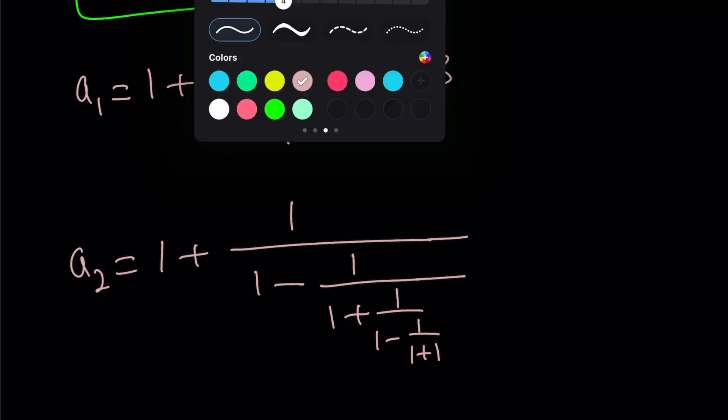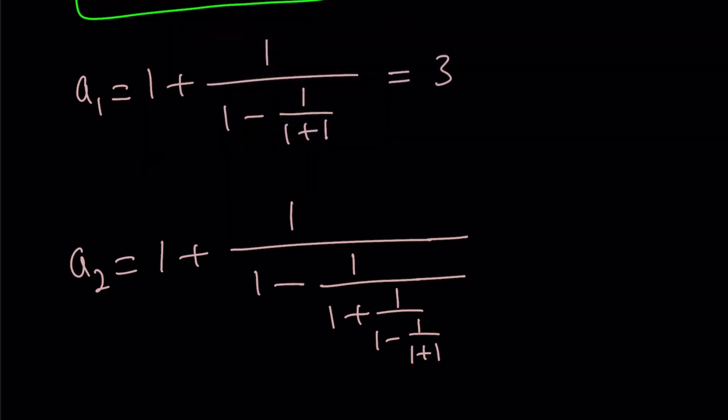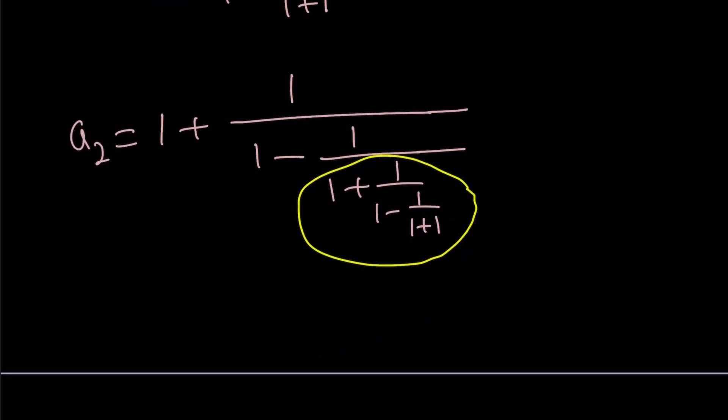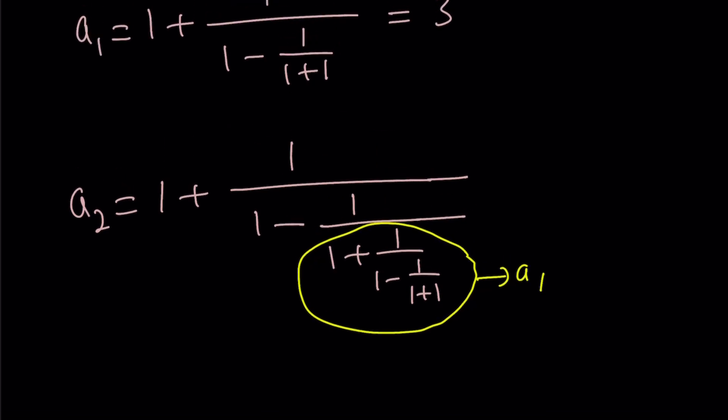To evaluate a sub 2, we can actually take advantage of the fact that we know a sub 1. Because a sub 2 contains a sub 1. And that's actually going to be the same for all terms. They're going to contain the previous terms. So knowing that a sub 1 is equal to 3 is very helpful because you only have to deal with 1 plus 1 over 1 minus 1 third. 1 minus 1 third is 2 thirds. If you reciprocate it, that's 3 halves plus 1 gives you 5 halves. So a sub 1 is 3 and a sub 2 is 5 halves.